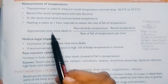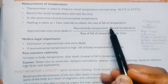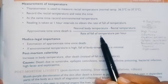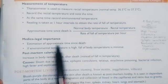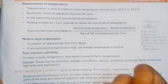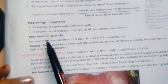Approximate time since death is calculated by: normal body temperature minus rectal temperature, divided by rate of fall of temperature per hour. From this we can know the approximate time since death. What is the medical legal importance of algor mortis?